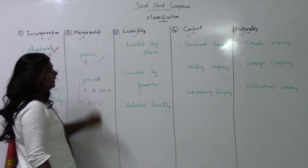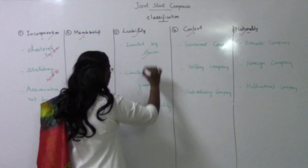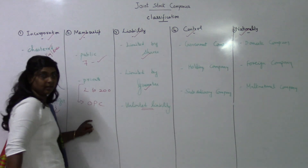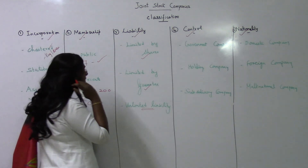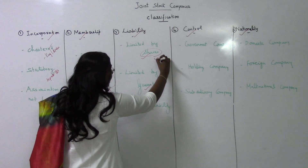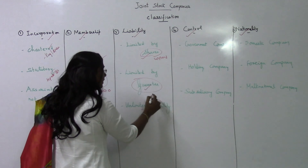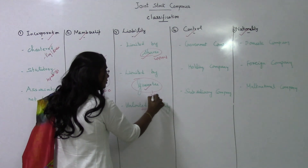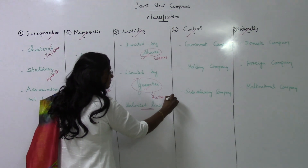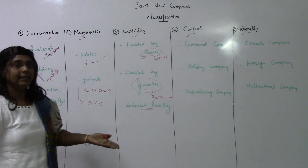With respect to liability: liability limited by shares, limited by guarantee, and unlimited liability. When limited by shares, liability is the unpaid amount on shares. With respect to guarantee, an extra amount will be given during the winding-up time. Unlimited liability is completely unlimited.